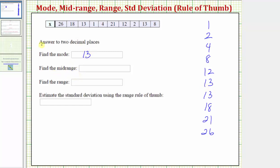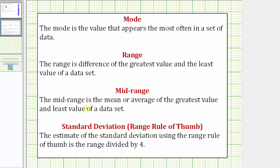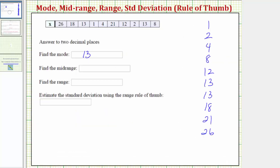Next we'll find the midrange. So again for review, the midrange is the mean or average of the greatest value and the least value of a data set. So the midrange is going to be equal to—we know the greatest value is 26 and the least value is 1—so the midrange is going to be 26 plus 1 divided by 2.